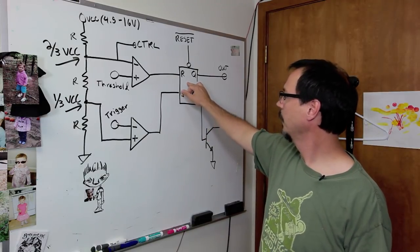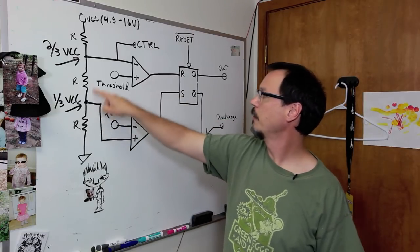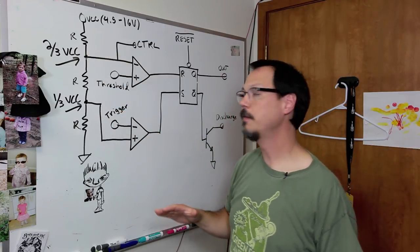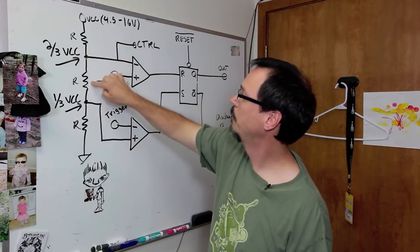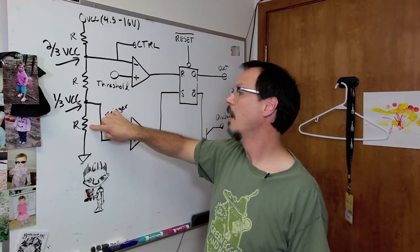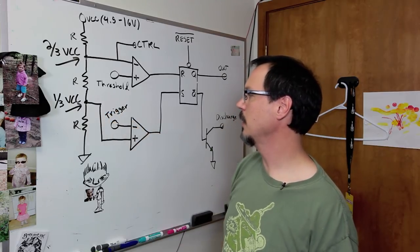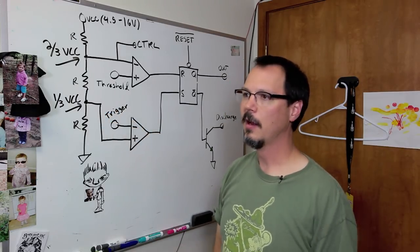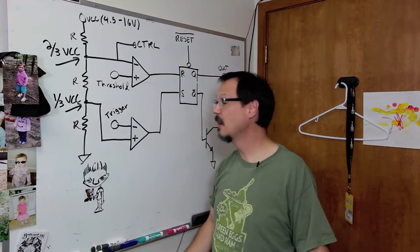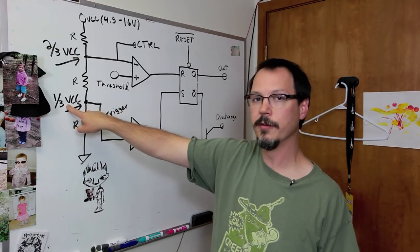Now, feeding the flip-flop are two comparators. And each comparator is set up on a threshold voltage. This voltage divider is, again, internal to the 555. And these three resistors are equal value. What value? I don't know what their values are. I wasn't able to find that in a datasheet, but I expect them to be somewhere in the neighborhood of, I don't know, 47K to maybe 500K at a guess.